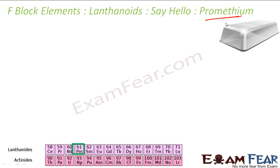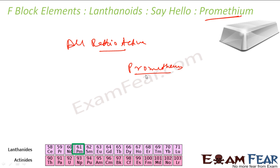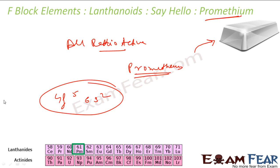Promethium has only radioactive isotopes — no non-radioactive ones. It was discovered in 1945 by analysis of fission products of uranium fuel. It is named after Prometheus, the Greek titan who stole fire from Mount Olympus and brought it to humans, symbolizing human intellect. The electronic configuration of promethium is 4f⁵ 6s².